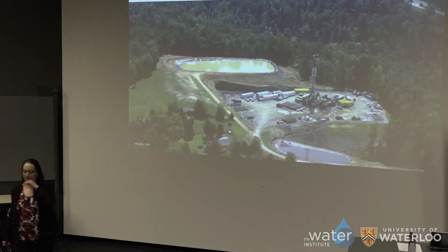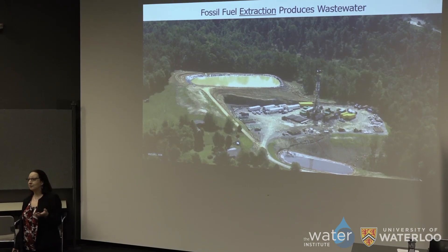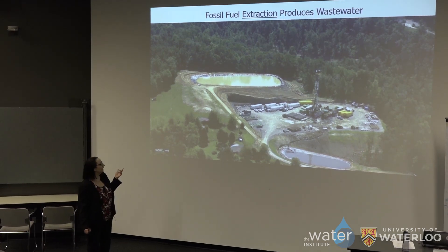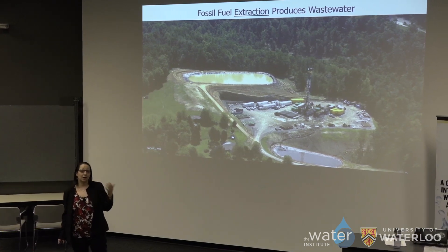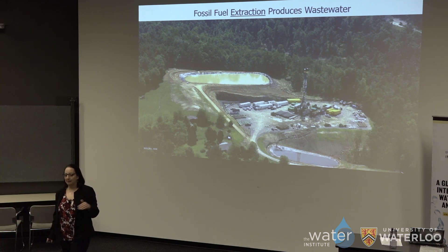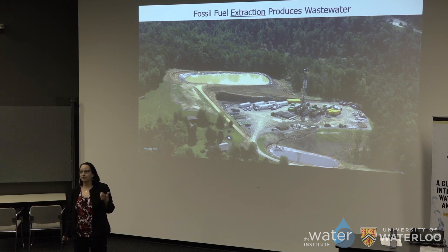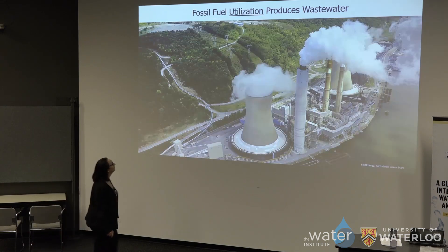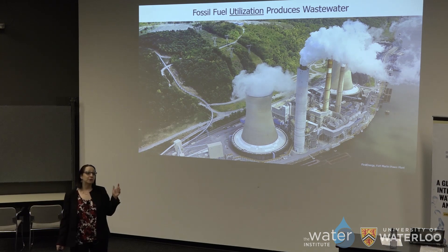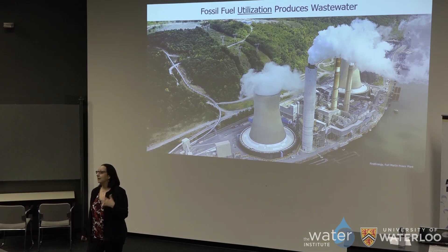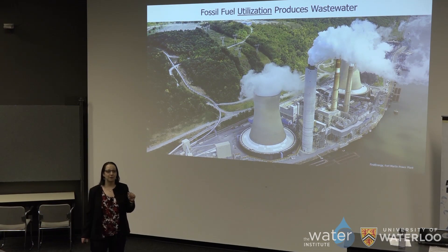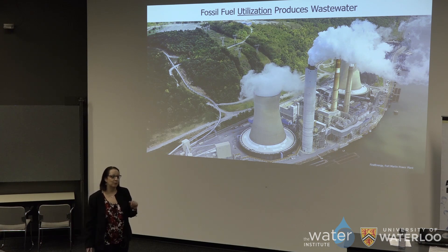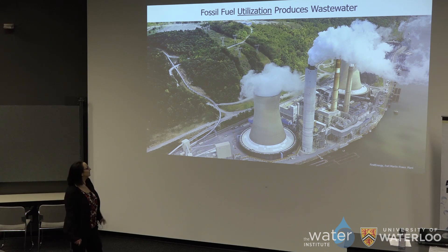Energy extractive industries use a significant amount of water and produce a significant amount of wastewater. This is a hydraulic fracturing activity in the Marcellus Shale Formation in West Virginia. It uses about a million gallons per hydraulic fracture. That technology has enabled extraction of gas from tight shale formations, but hydraulic fracturing is not actually the big driver for bromide problems nationally in the US. Once we extract coal or natural gas, predominantly what we do is burn it for electricity generation. That generation process also uses significant water and produces significant wastewater — both extraction and utilization have water quantity and quality impacts.